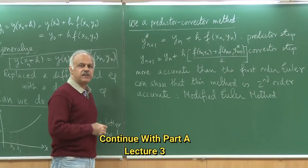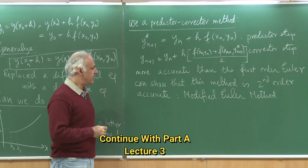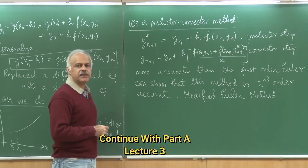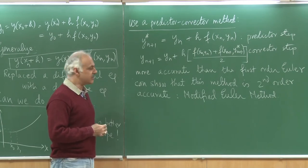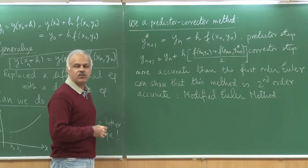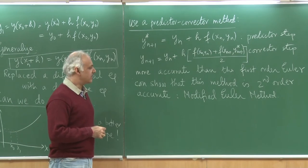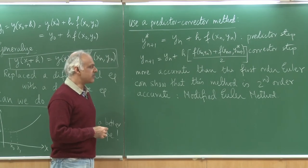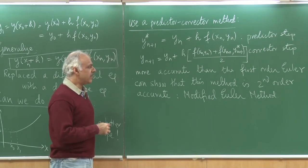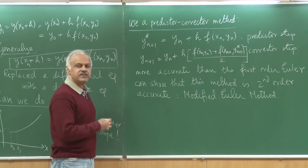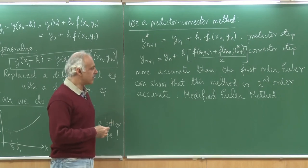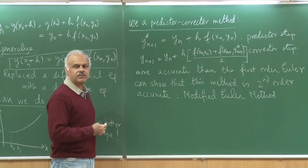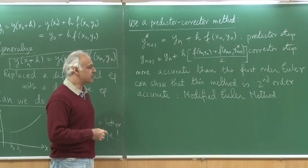In this method, we are computing a little bit more than what we are computing in the first order Euler method. So, it is always a balance between how much you want to compute and how much accuracy you would like. In fact, you can now design methods which are even higher order accuracy — third order methods, fourth order methods and so on.